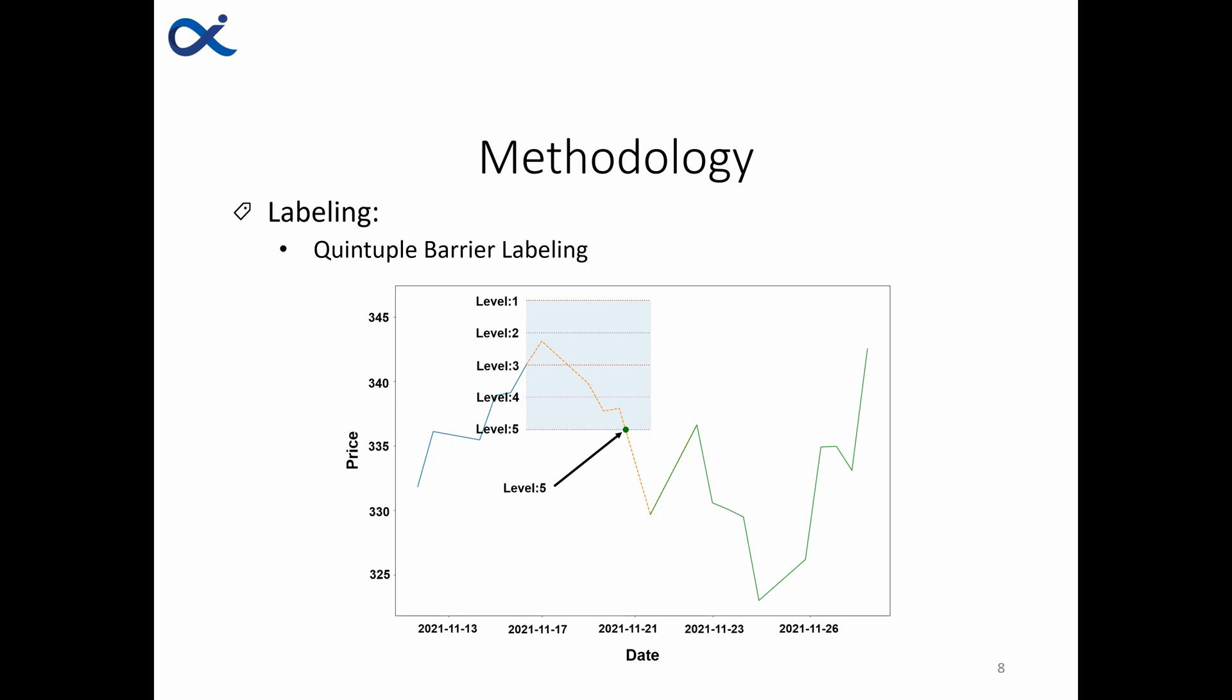Now for labeling the next five days trend into five classes we are using quantile barrier labeling. Quantiles are the points that split the distribution with equal probabilities. We're using this method since the distribution of data across time would be changed and equally separating the levels of the trend is not a really good method.